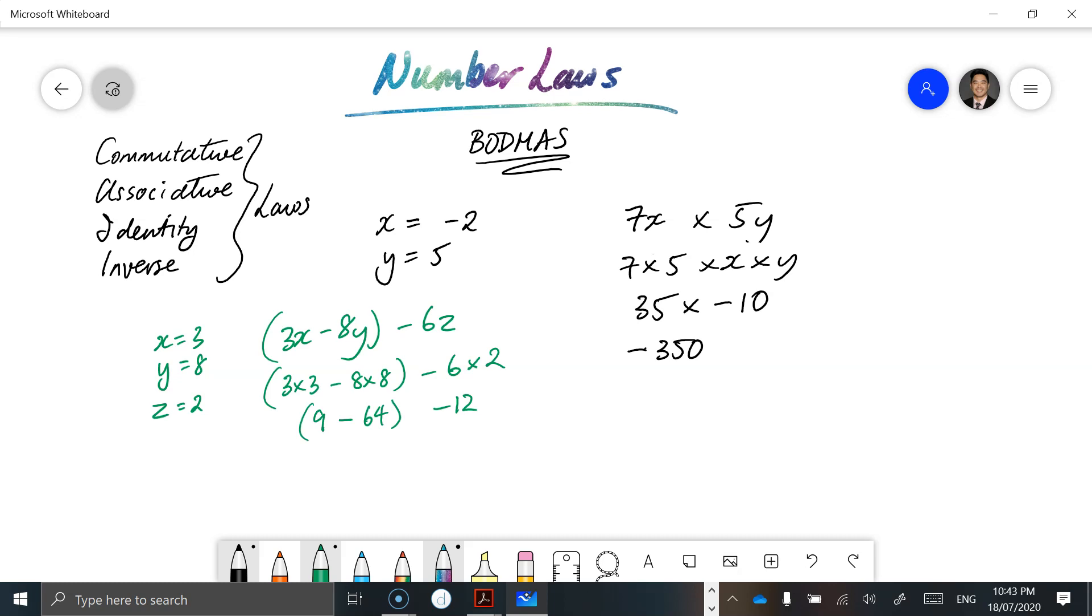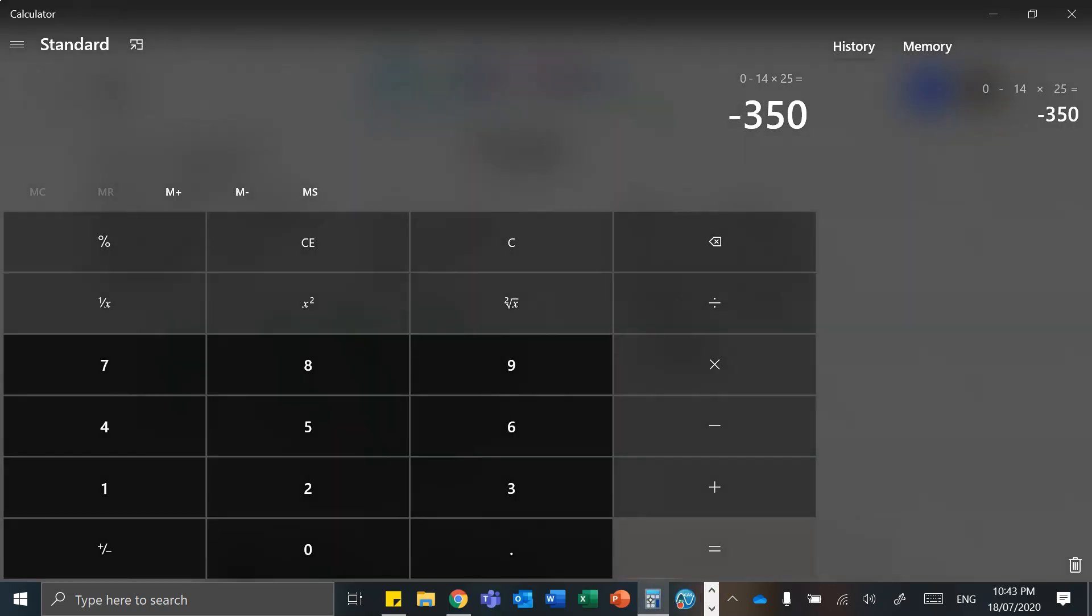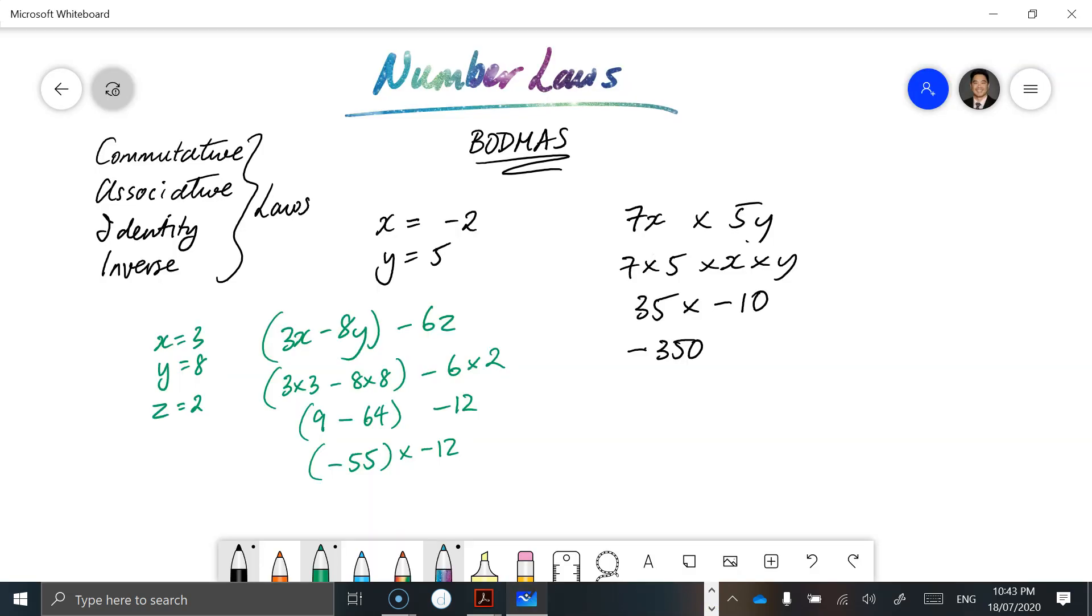And 64 minus 9 is minus 55. And multiply that by minus 12, we end up getting 15. 55 times 12 is equal to 660. And a negative times a negative becomes a positive.